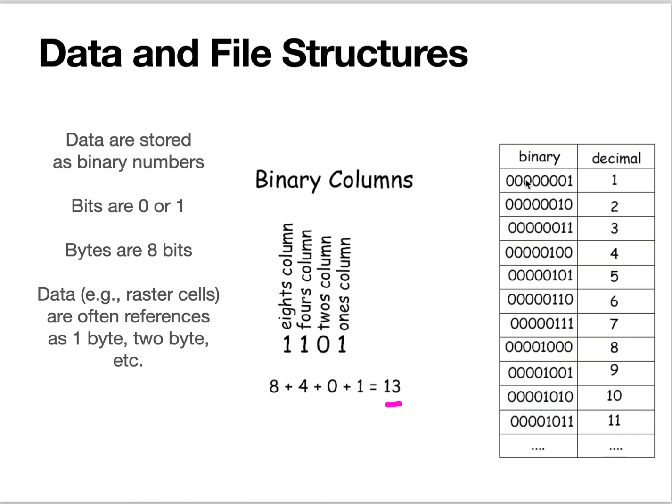And then we can also decide part of our binary sequence is going to be for the decimal part, that is, to the right in a real number of the decimal point, and part to the left.